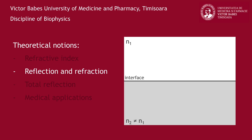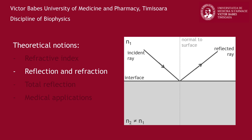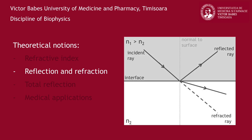At the separation interface between two transparent mediums with different values of refractive indices, reflection and refraction phenomena occur. Reflection involves the returning of the ray in the incident medium. Refraction consists in the propagation of the ray in the second medium, usually accompanied by a change in the propagation direction. If the second medium has a greater refractive index than the incident medium, the refracted ray will approach the normal drawn at the separation surface. Otherwise, the refracted ray will travel farther away from the normal. When a light beam falls on the separation surface of two different optical mediums, part will reflect while the rest will refract.